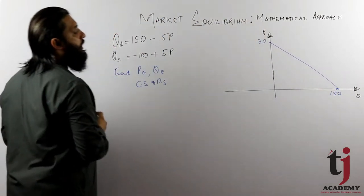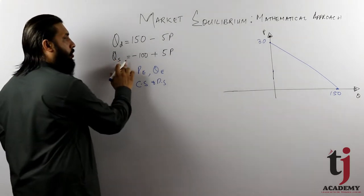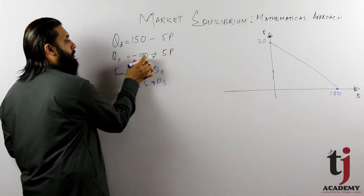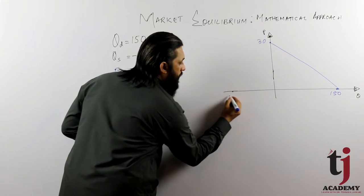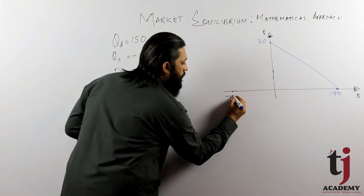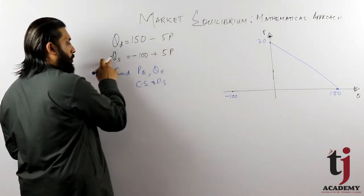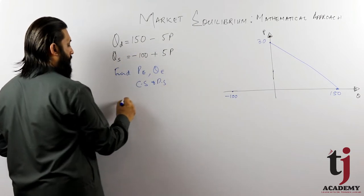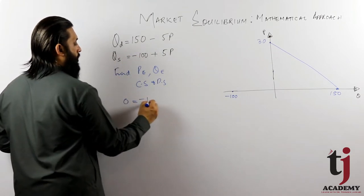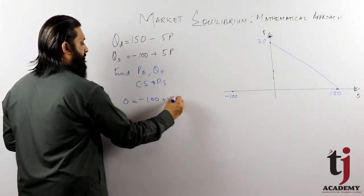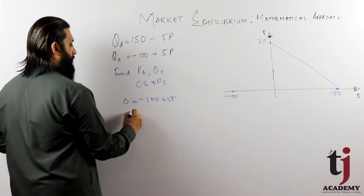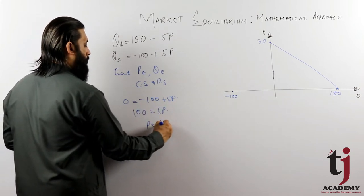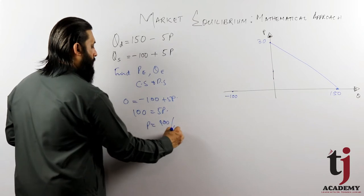If you want to draw the supply curve, when price is 0, quantity will be minus 100. So the supply function is: minus 100 plus 5P. Setting quantity to 0: 5P equals 100, so P equals 100 over 5.